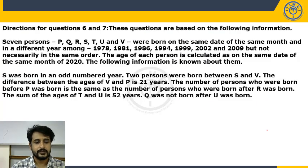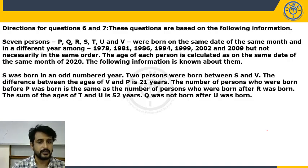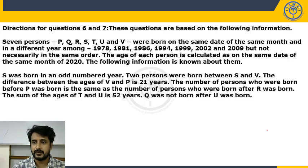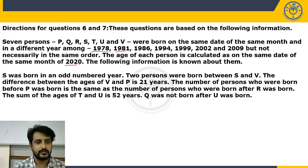Seven persons P, Q, R, S, T, U and V were born on the same date of the same month, but in different years among 1978, 1981, and so on — not necessarily in the same order. Sometimes the number of persons may be more, like nine or ten. The age of each person is calculated as on the same date of the same month, 2020.